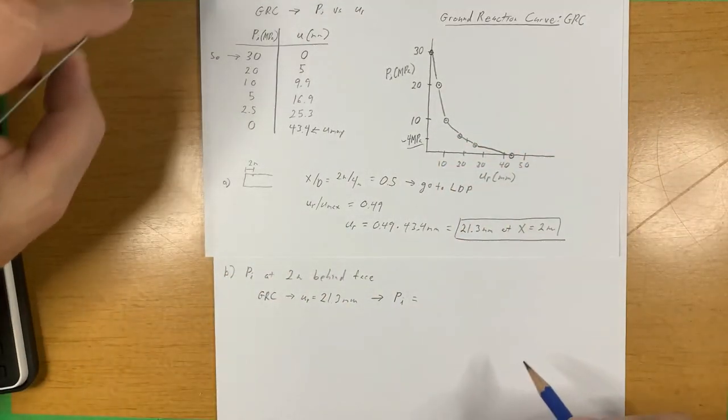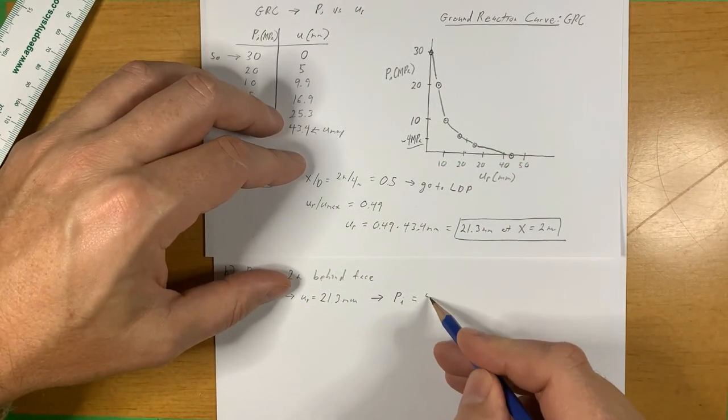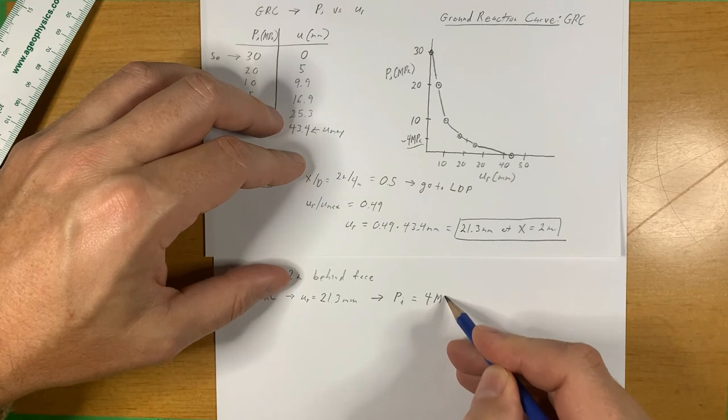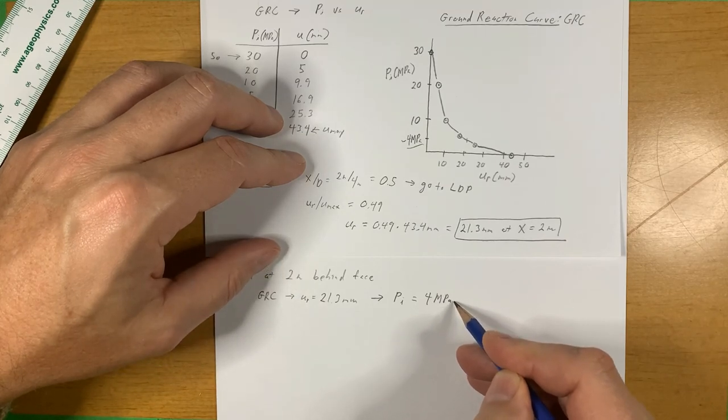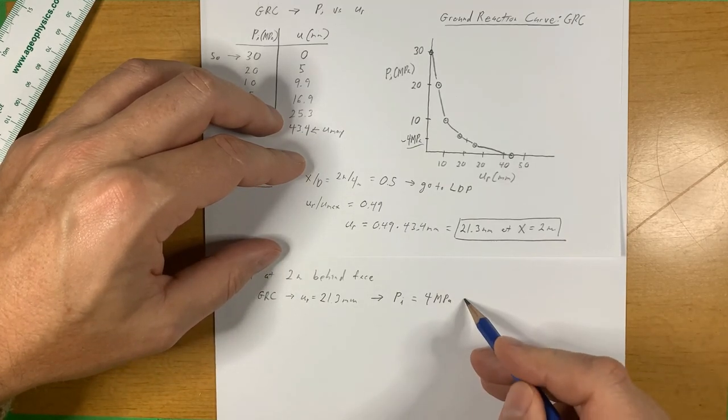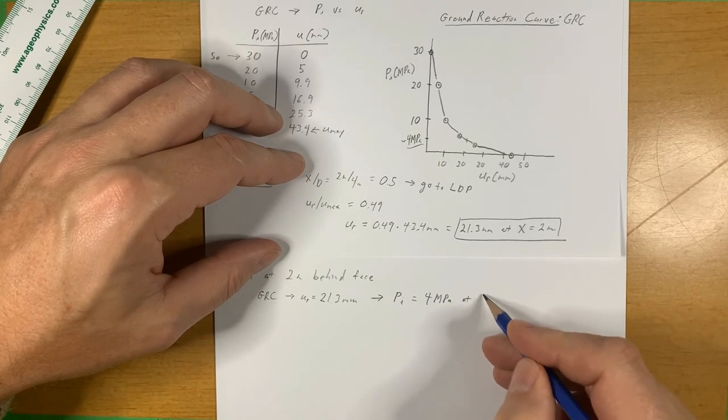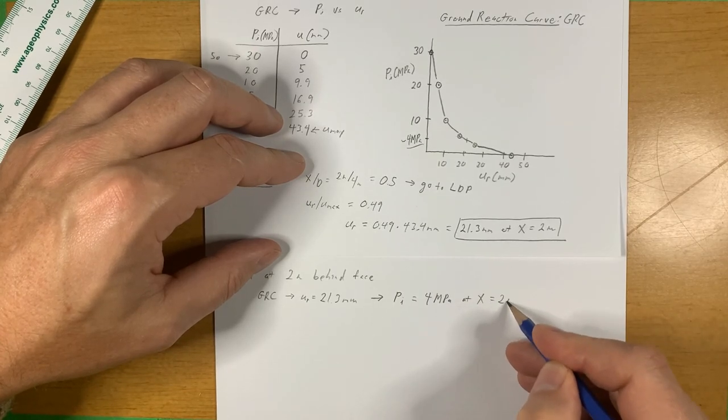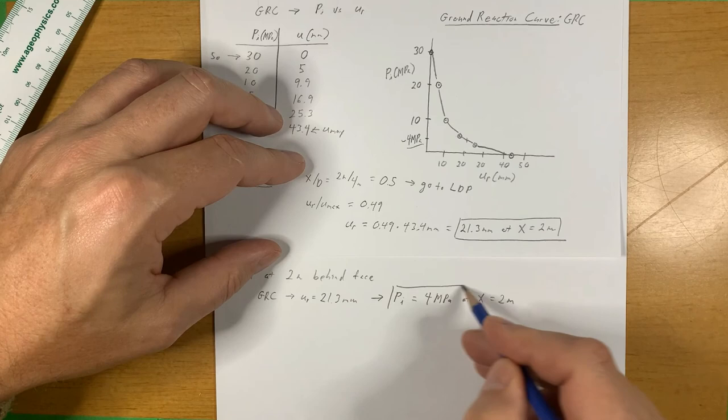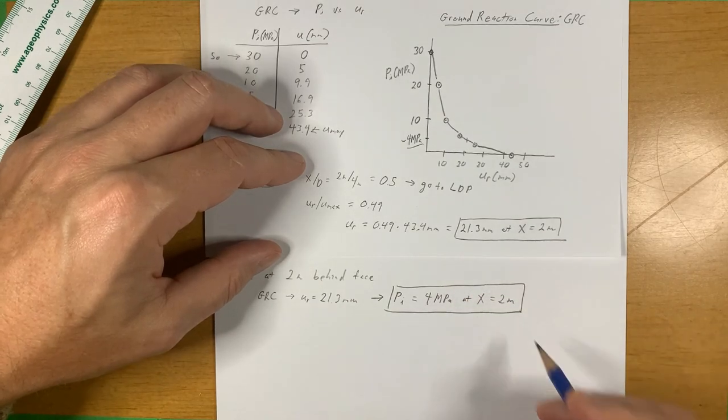Your P_i value there is about 4 MPa. So P_i is about 4 MPa at X equals 2 meters.